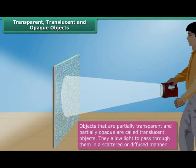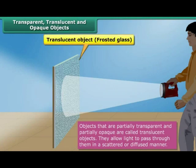Objects that are partially transparent and partially opaque are called translucent objects. They allow light to pass through them in a scattered or diffused manner. Frosted glass, tracing paper, greased paper, etc. are examples of translucent objects.